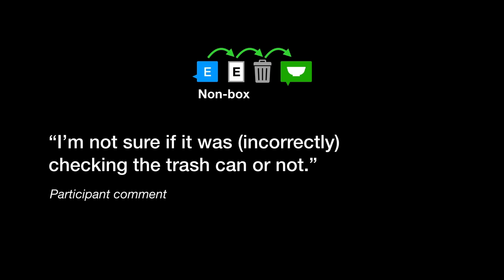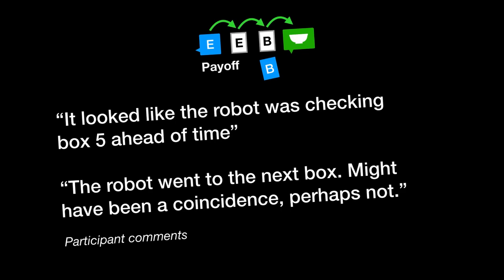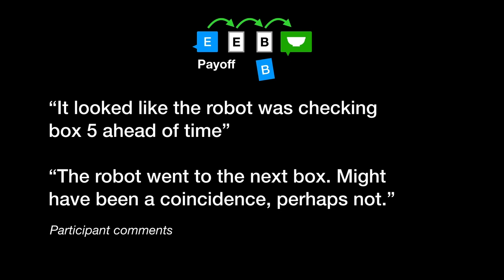Looking at participant responses, we think this could be because participants didn't understand that the robot was checking a trash can, as opposed to just pausing on its way back. On the other hand, we can see that many participants noticed that the robot detoured to the box that would pay off. They just didn't chalk it up to anything more than chance.